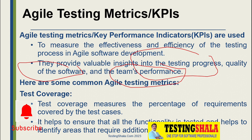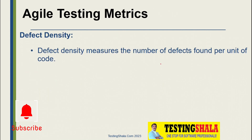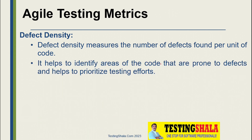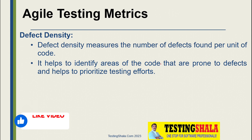The second metric is defect density. Defect density measures the number of defects found per unit of code. Using this metric we can easily identify areas of code that are more prone to defects, which helps us prioritize testing efforts. If more defects are coming from a particular area, we have to focus on that area because it has higher defect density and the application is not stable there.